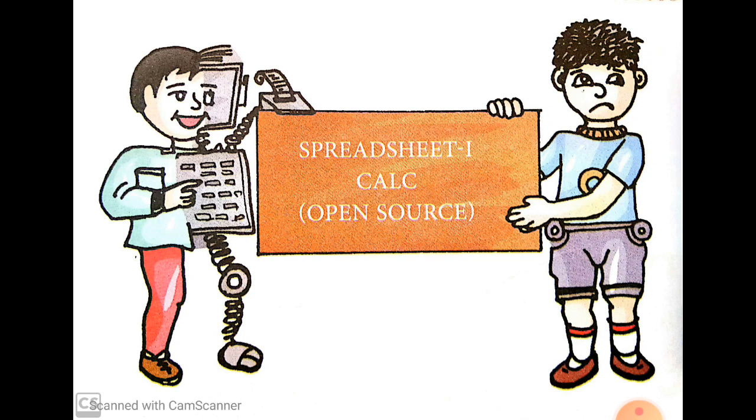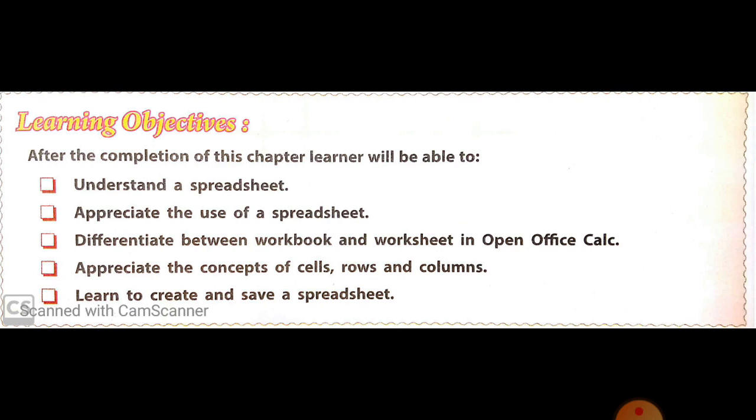In this chapter, we will discuss the following topics: about a spreadsheet, use of a spreadsheet, differentiate between the workbook and worksheet in open office calc, concept of cells, rows and columns, and how to create and save a spreadsheet.